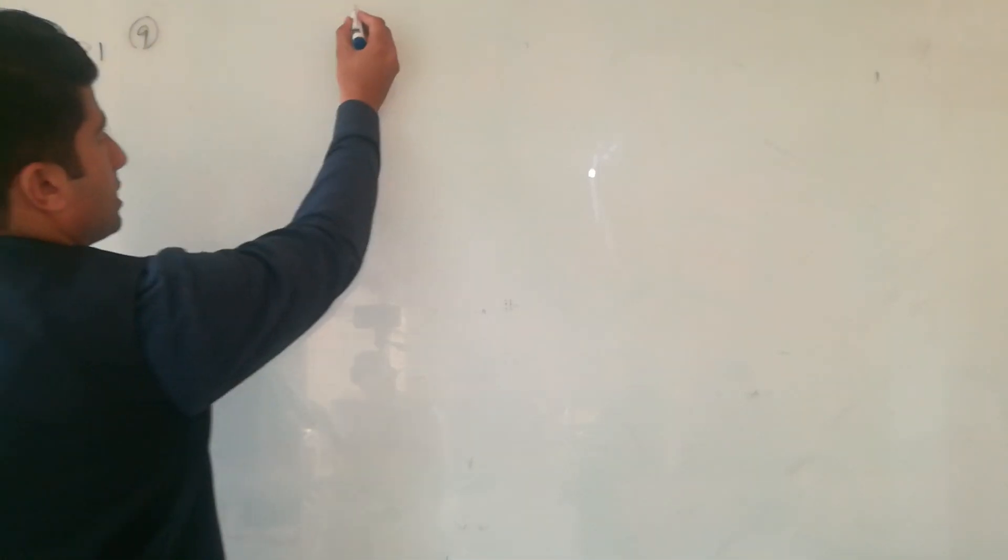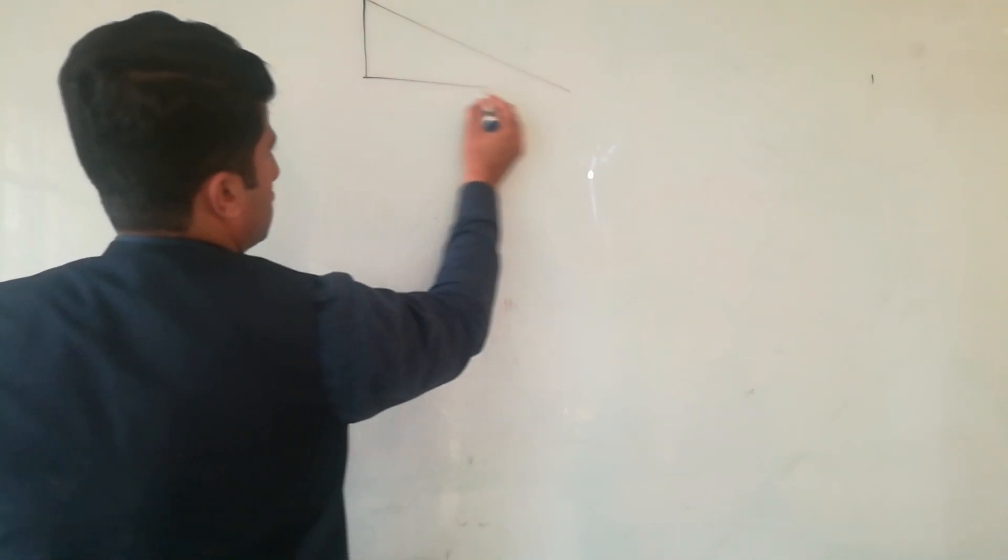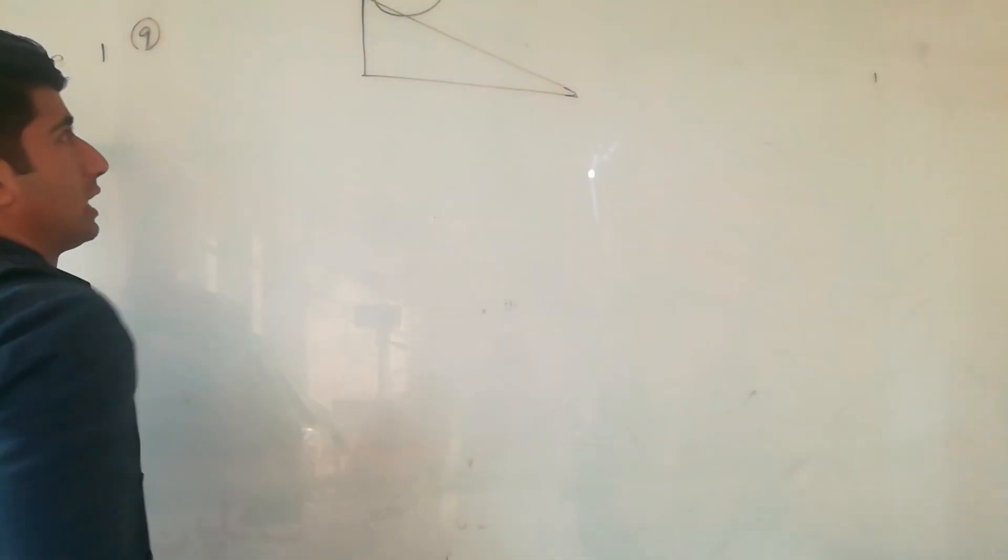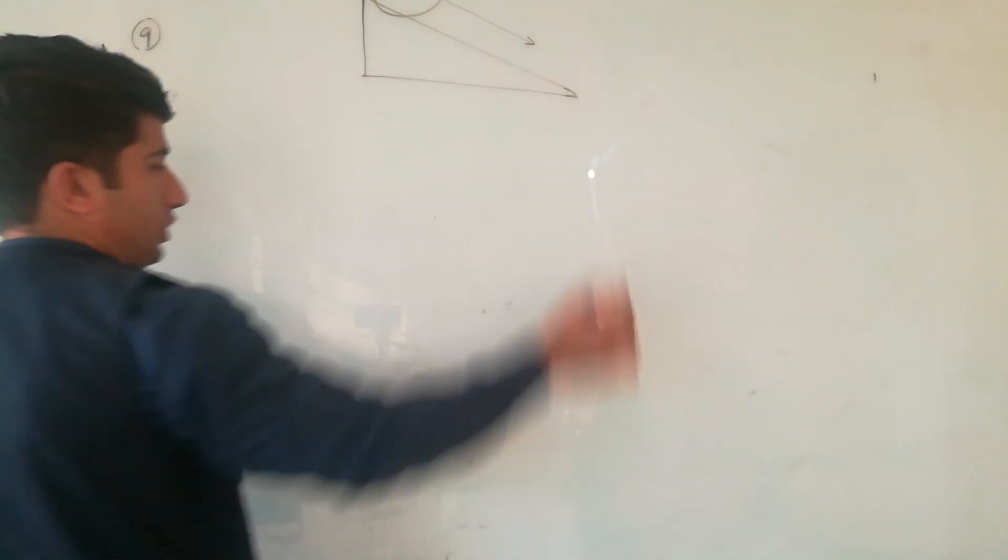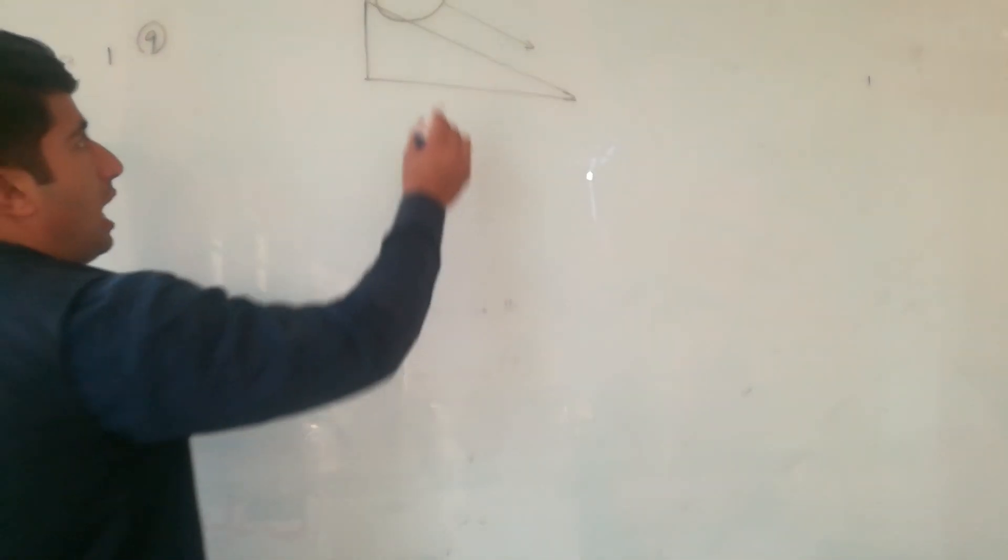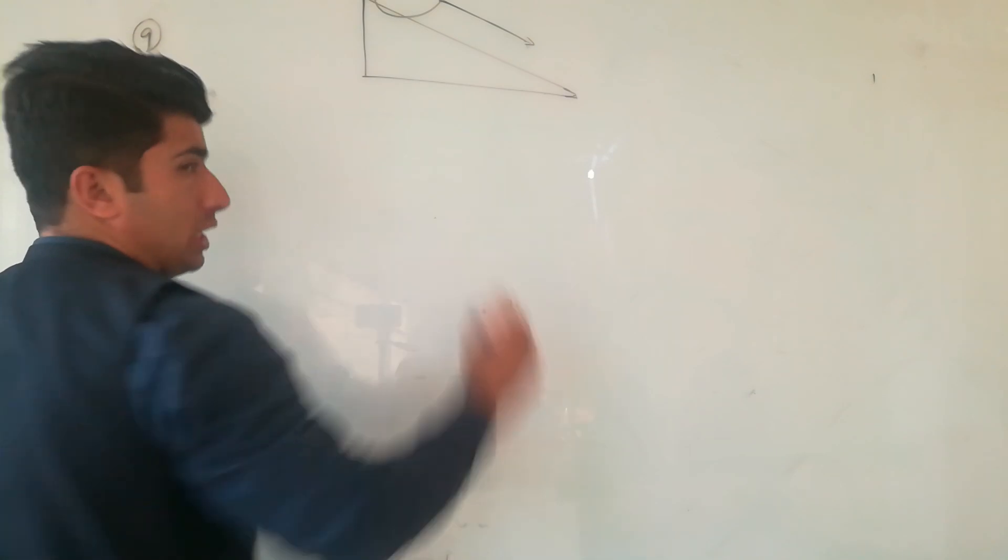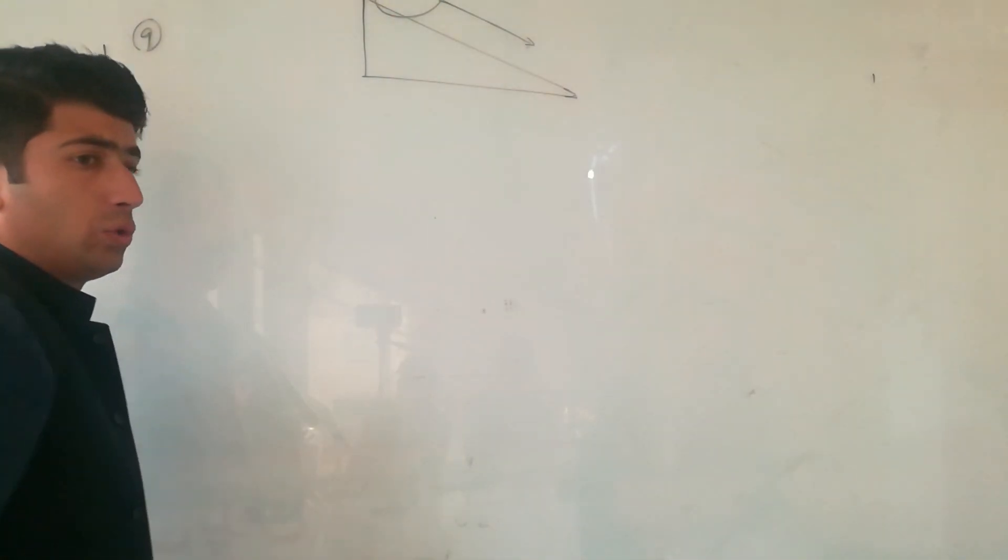We showed that when a hoop rolls down an inclined plane, half of kinetic energy is rotational and the other half is translational. Let's prove that once again. Let's suppose the hoop rolls down the inclined plane. Half the kinetic energy is for linear motion and half is for rotational motion.